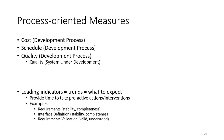Examples of leading indicators include requirements stability and completeness, interface definition stability and completeness, and validating how complete and consistent the requirements are. These leading indicators revolve around requirements definition because getting the requirements right — removing uncertainty from them — is the most critical step in the process. Any changes or defects that occur later in the process are much more expensive, so significant emphasis is placed on leading indicators of requirements definition.